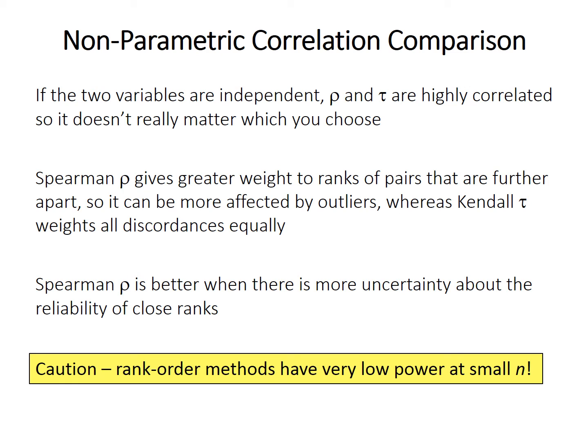In contrast, because Kendall's tau treats all discordant points equally, it can be more sensitive to closely spaced points. If two points are very close together, they might end up being counted as discordant even though measurement uncertainty means they should be concordant. In that case, Spearman's rho may be better, because closely spaced points will contribute very little to the overall correlation.